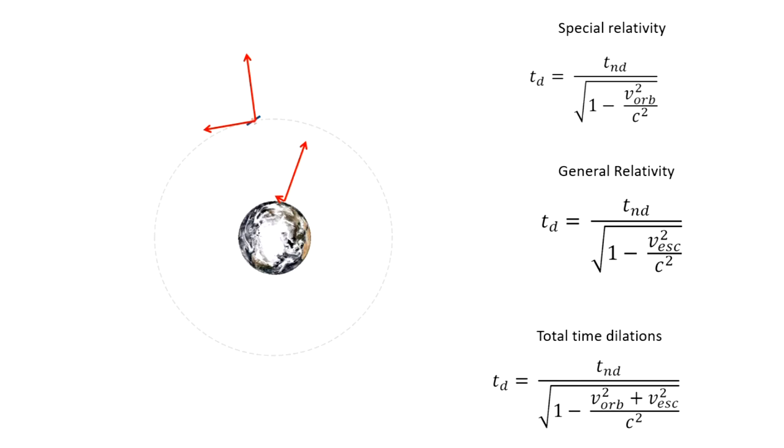GPS satellite clocks are designed to run a little bit slower on Earth, so they speed up and run at the same rate as the ground station's clock once they are in orbit.